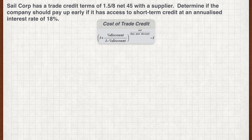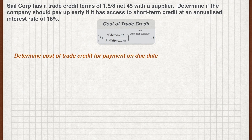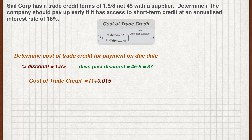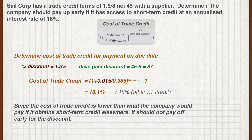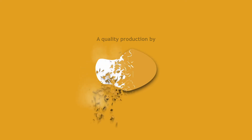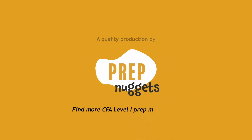Our first step is to calculate the cost of trade credit if the company chooses to pay on the due date. The discount is 1.5% and the number of days past discount is 37. Plugging these figures into the cost of trade credit formula, we get 16.1%, which is less than the 18% interest rate offered by other short-term credit. Since the cost of trade credit is lower than what the company would pay elsewhere, it should not pay off early for the discount — rather, it should delay payment until the due date.